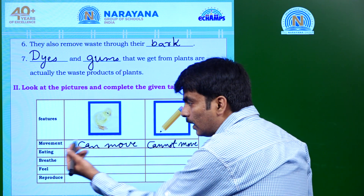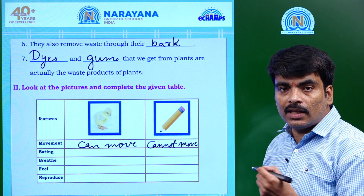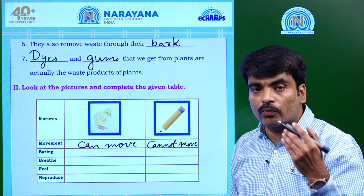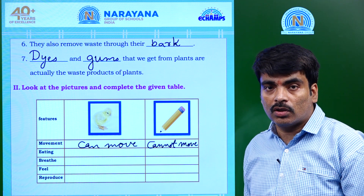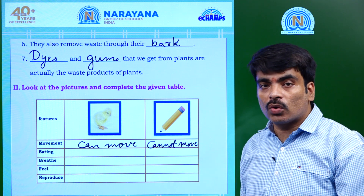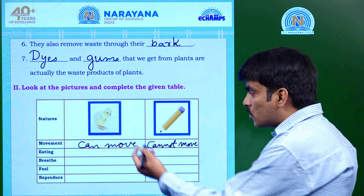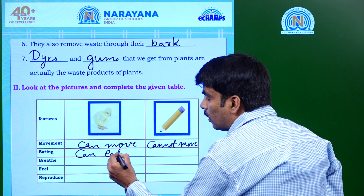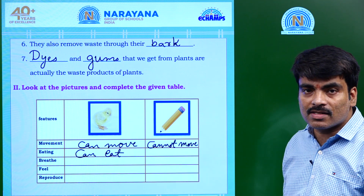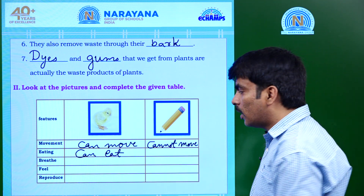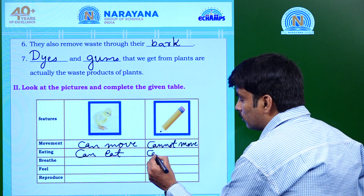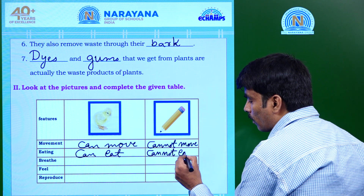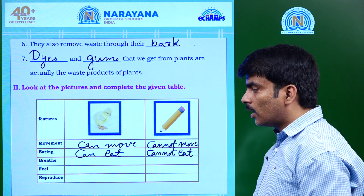Now, eating habits. In these two, which one needs food and eats food, which is required to grow? It is the chick — chick can eat and has the habit of eating. Have you ever seen a pencil eating something? No, it cannot eat.